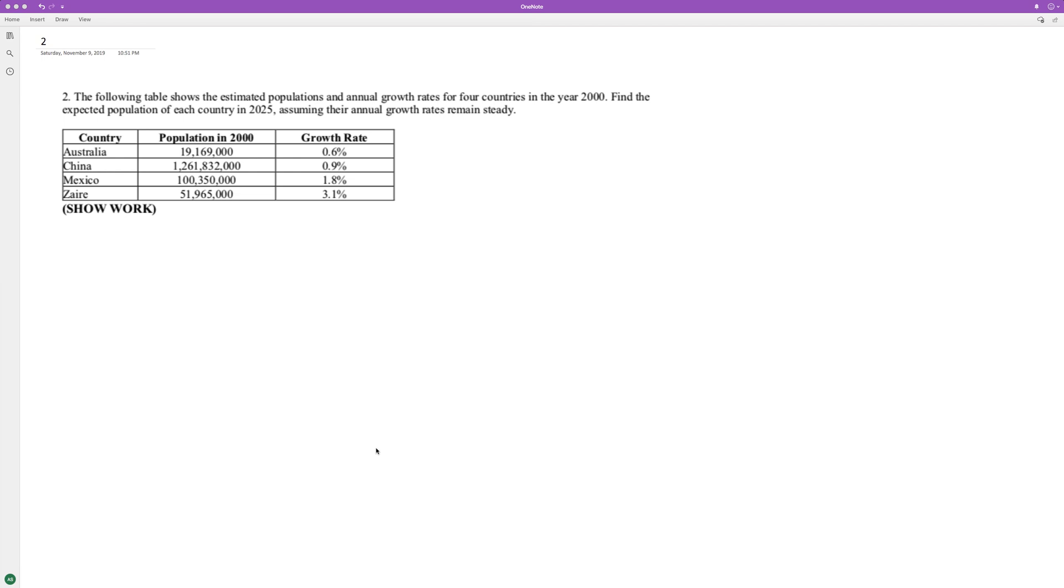Figure out the growth rates for these four countries from the year 2000. We're assuming expected population for each country by 2025, assuming their annual growth rate remains steady. So starting off with Australia.